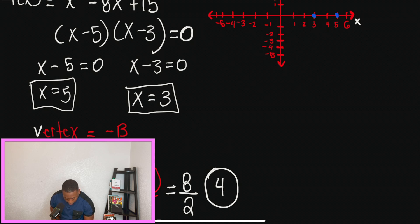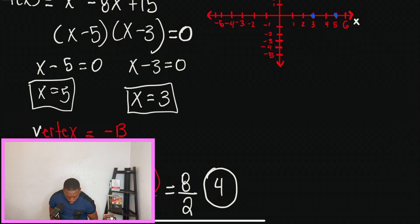So we plotted the x-intercepts, and now remember that we have a vertex of 4 negative 1. So when I go to positive 4 and I go down to negative 1, this is where my last point should be.